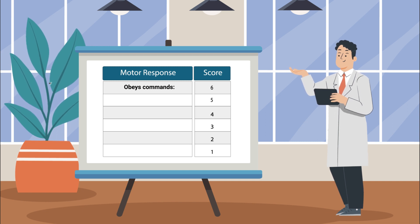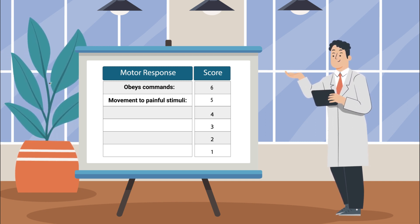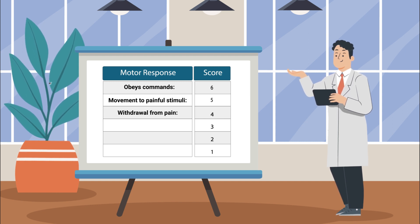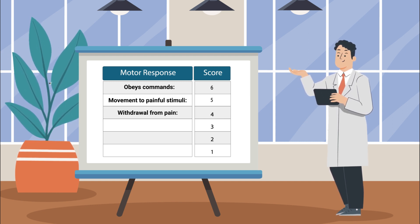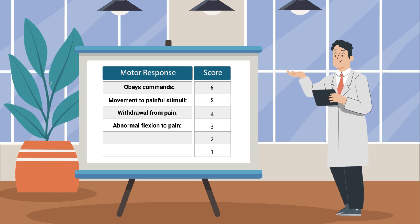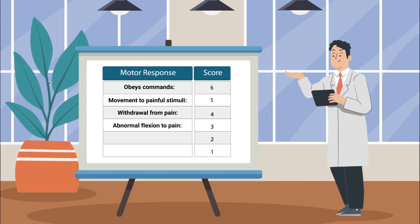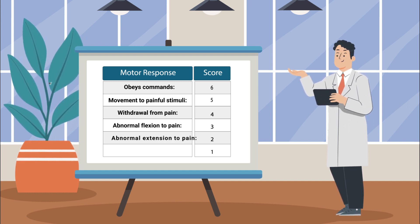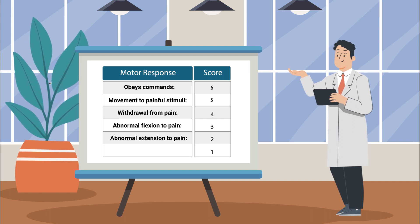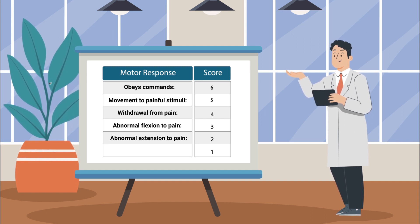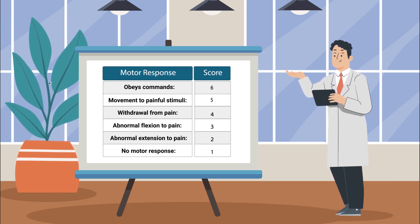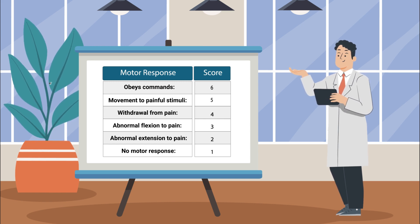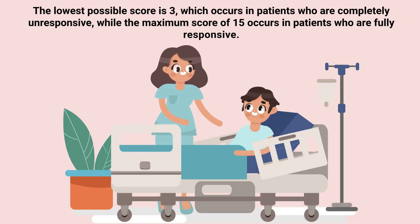Then you must assess their motor response. If they are able to obey commands, they get a score of six. If they move in response to painful stimuli, they get a score of five. If they demonstrate withdrawal from pain, they get a score of four. If they demonstrate abnormal flexion to pain, they get a score of three. If they demonstrate abnormal extension to pain, they get a score of two. And if there is no movement or motor response, they get a score of one.